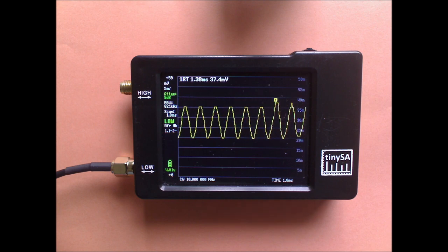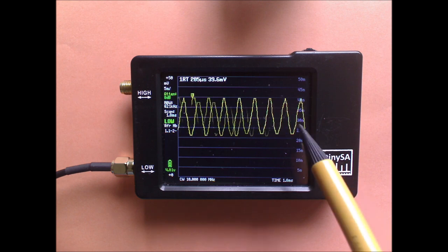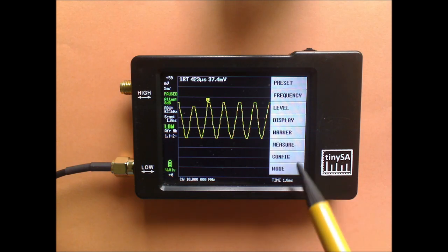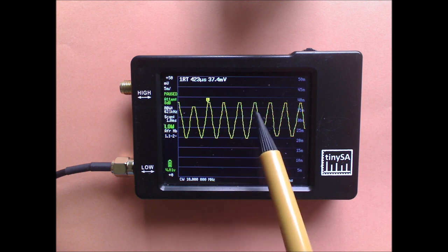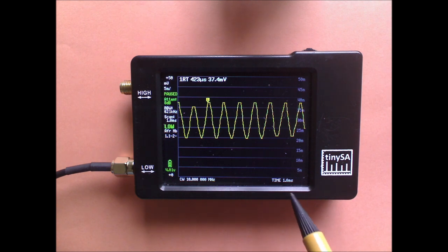It's also possible to count the cycles that we see here and count the time per cycle. And to do that, I first go to display and pause the sweep. So we can count 1, 2, 3, 4, 5, 6, 7, 8 and a bit. So about 8.5. And we have the total sweep time 1.8 ms. So if we divide 1.8 ms by 8.5, we get about 0.2 ms. And that corresponds nicely with 5 kHz.